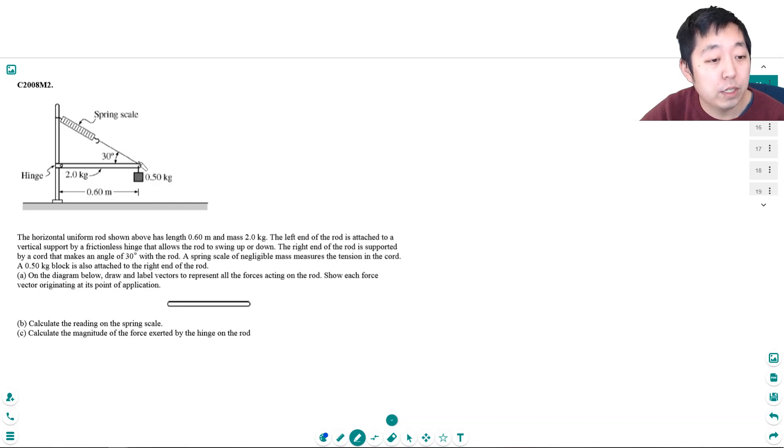A spring scale of negligible mass measures the tension in the cord. A 0.5 kilogram block is also attached to the right end of the rod. On the diagram below, draw and label all vectors to represent the forces acting on the rod and show each force vector originating from its point of application. This is definitely a torque problem, right, because there's going to be some rotation.